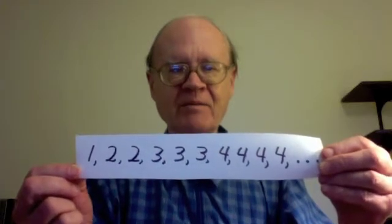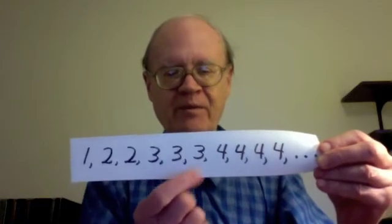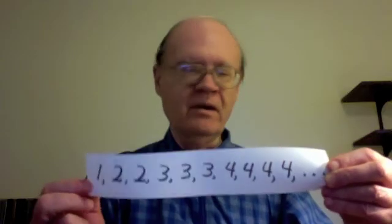Every integer n in the sequence appears exactly n times. For example, the integer 3 appears exactly 3 times. The integer 37 appears exactly 37 times. This integer appears exactly this many times.